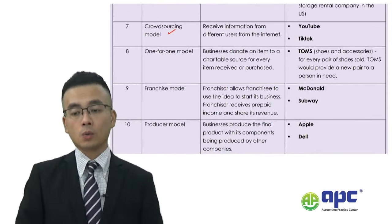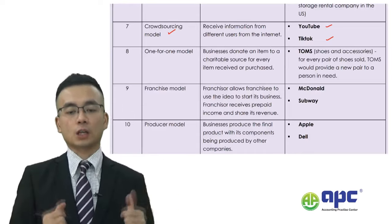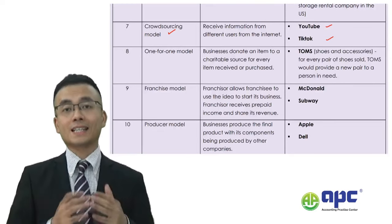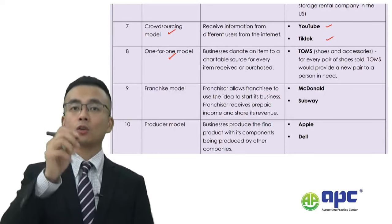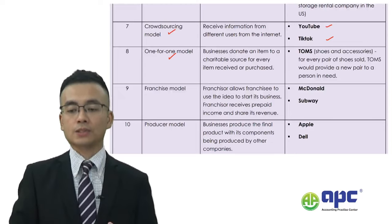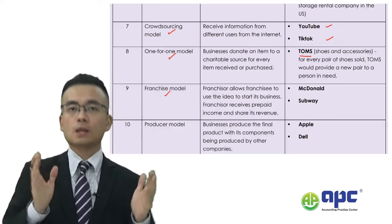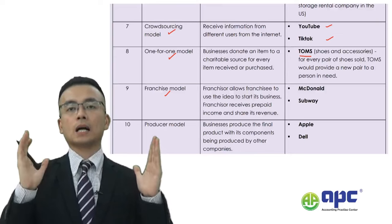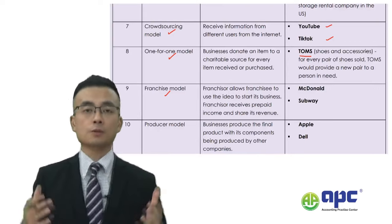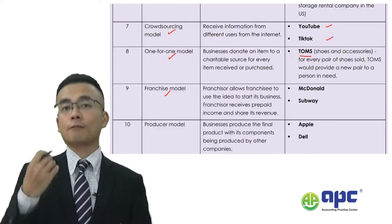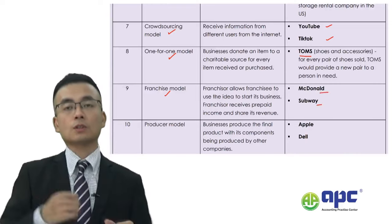The crowdsourcing model is where — as we saw with YouTube, TikTok, and Wikimedia — customers are allowed to publish their own content, because the platform itself doesn't have any videos at all. The one-for-one model means: I sell this to you at $1, and I take $0.01 and donate it to charity. A common example is the Tom's company. The franchise model means I allow you to use the way I run the business — I charge you an upfront franchise fee, and then share, for example, 5% of your revenue of $1 million as a management charge each year. McDonald's and Subway use the franchise model.